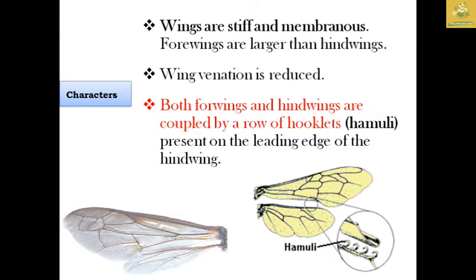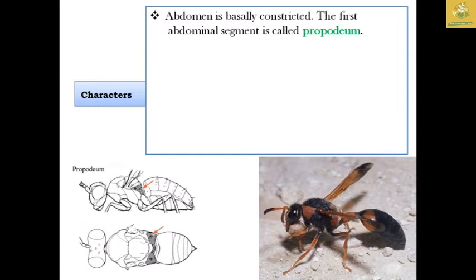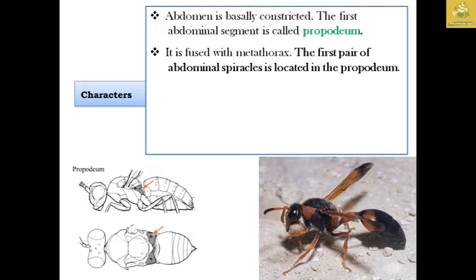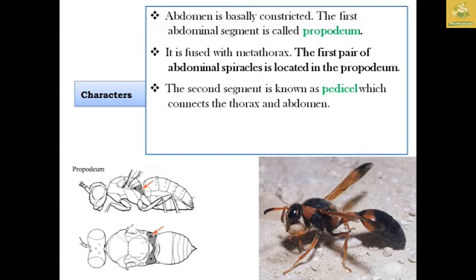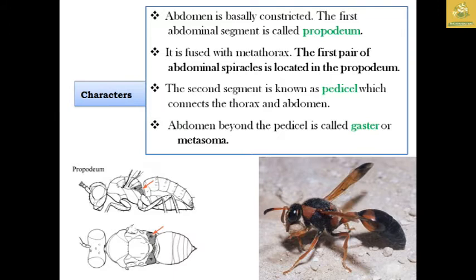Both forewings and hind wings are coupled by a row of hooklets known as hamuli, present on the leading edge of the hind wing, used for flight. The abdomen is basically constricted. The first abdominal segment is known as the propodium and is fused with the metathorax. The first pair of abdominal spiracles is located in the propodium. The second segment is the pedicel, connecting the thorax and abdomen. The abdomen beyond the pedicel is known as the gaster, also called the metasoma.